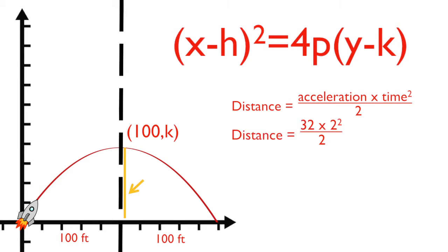Plugging in 2 for the time and 32 feet per second squared for the acceleration gives us 64 feet as the distance, which is also the y-coordinate of the vertex.